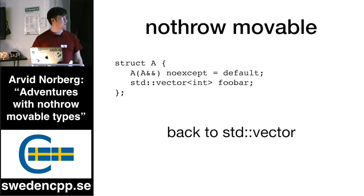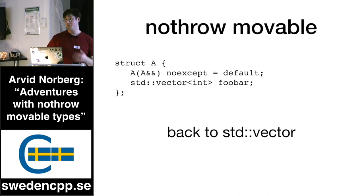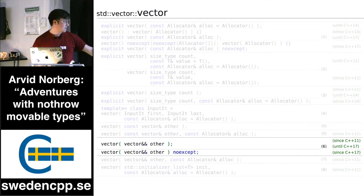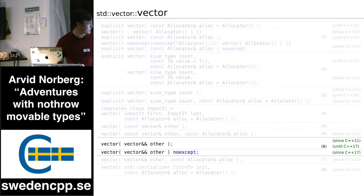Let's get back to the vector example: why is this failing? I looked at the actual constructors of `std::vector`. The interesting part is there's a move constructor that's not `noexcept` from C++11 until C++17, and then there's one since C++17 that is `noexcept`. So basically this was fixed in C++17, but I was using C++11, so I still suffered from it.